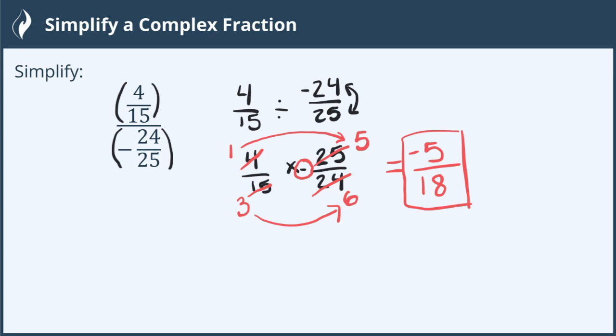If I didn't simplify before the multiplication I would have to simplify afterwards. This would be 4 times negative 25 gives me negative 100 over 15 times 24 which is a much larger number to try and simplify. 15 times 24 is 360.